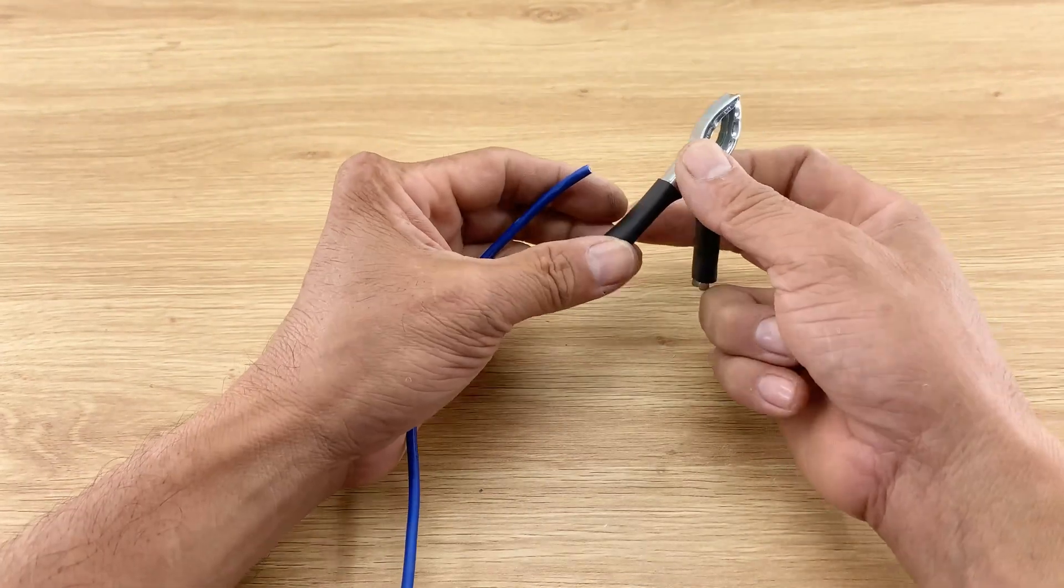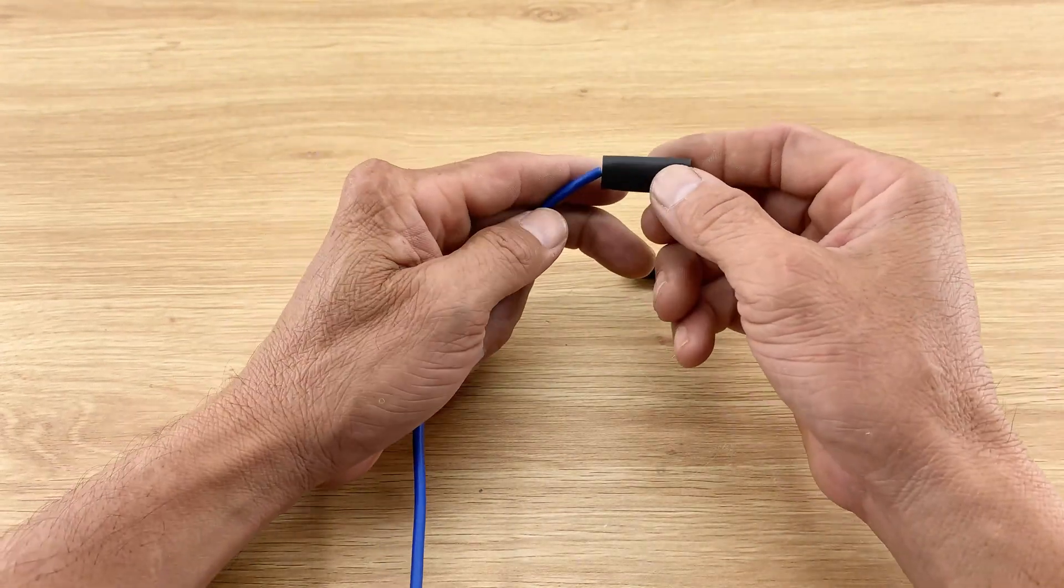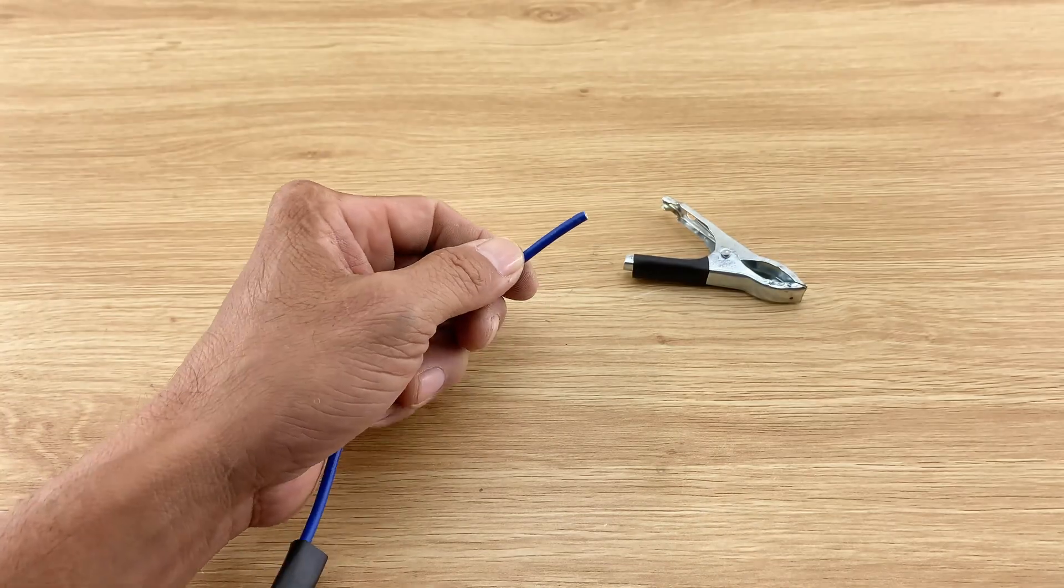I'll take a separate blue wire, strip one end, and attach an alligator clip to it, ensuring a good, tight crimp.